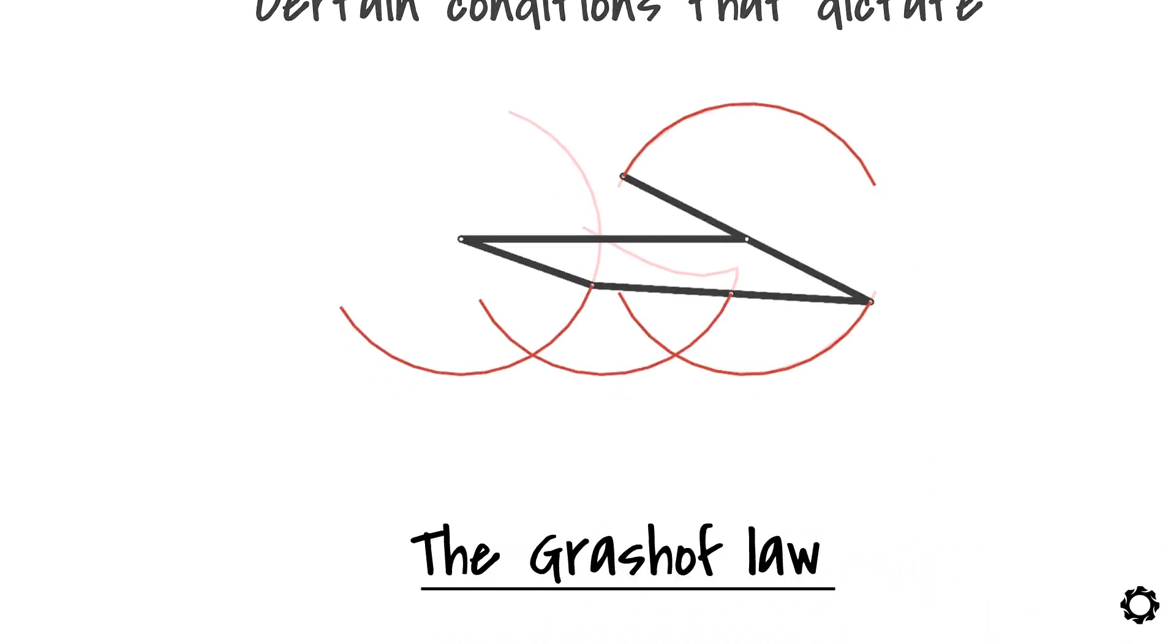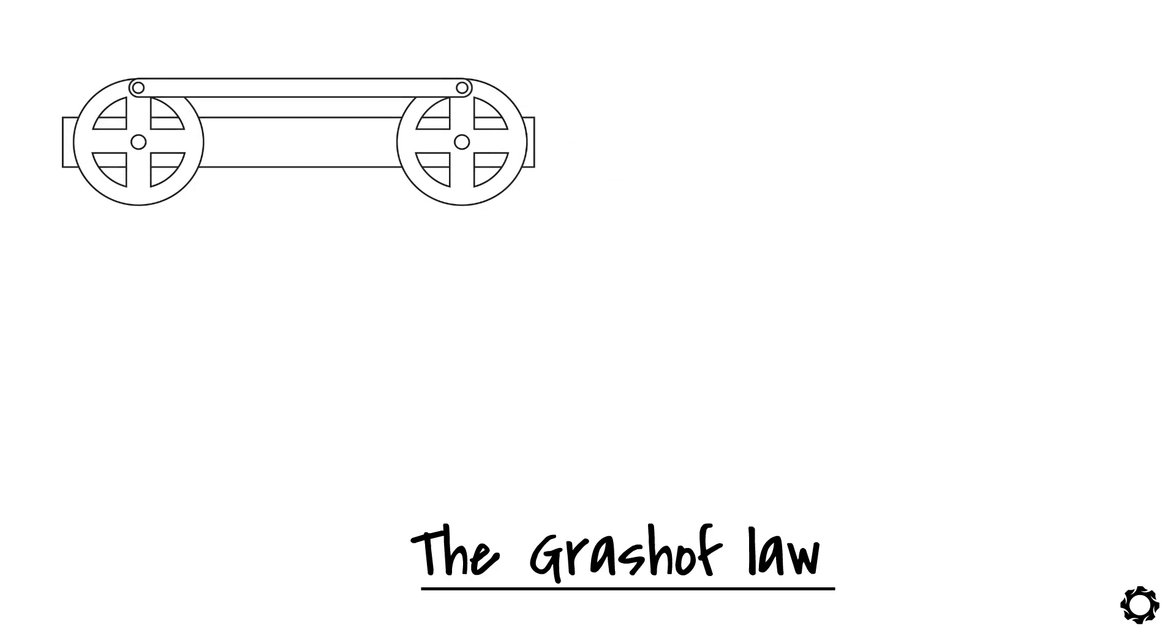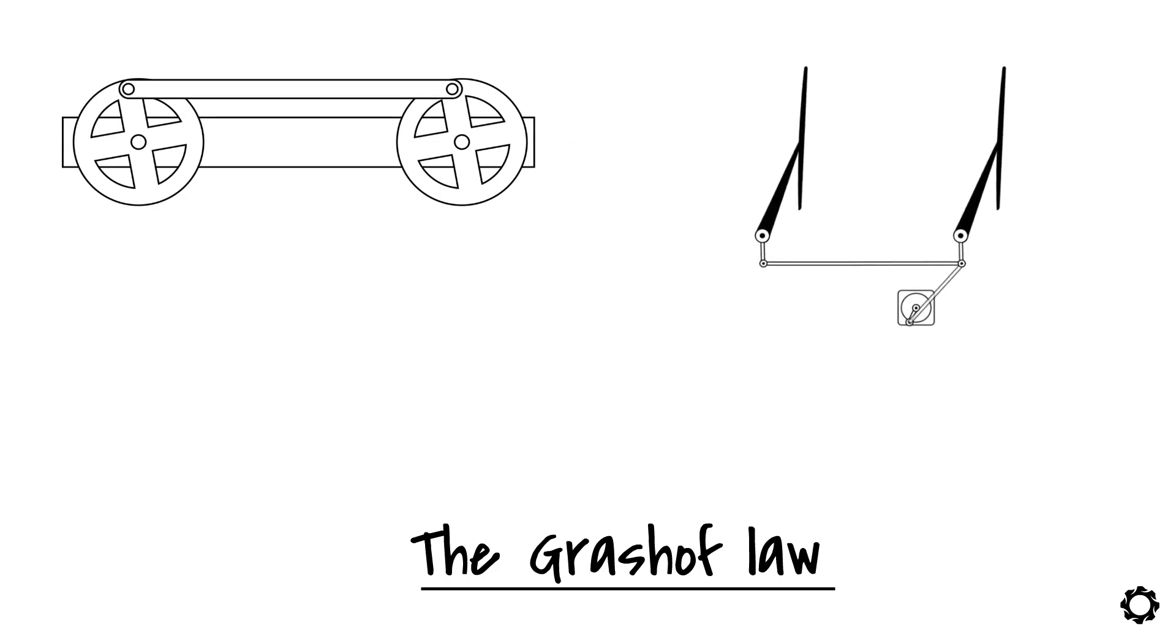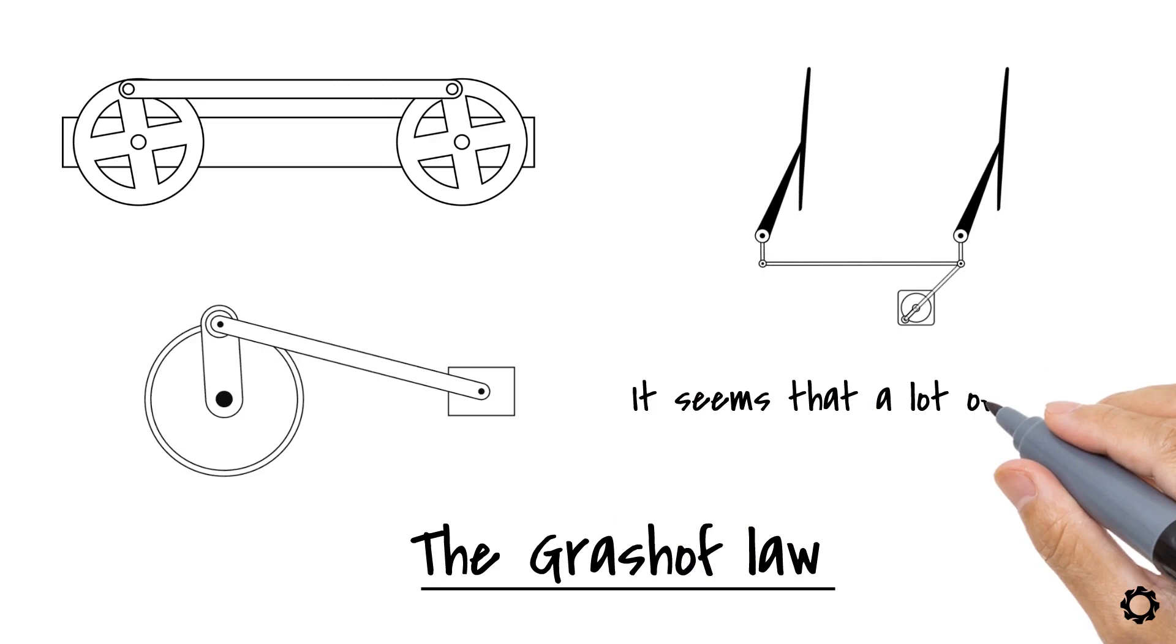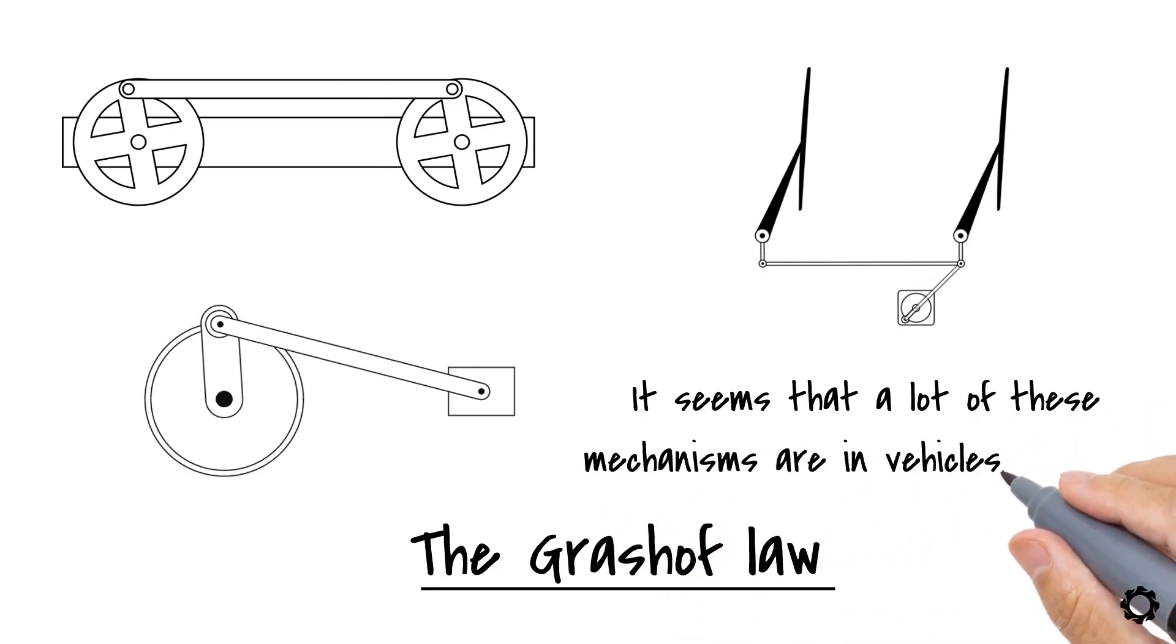Grashof's law can tell if the 4-bar mechanism behaves like a double crank mechanism seen in the locomotive mechanism, the double rocker mechanism which is seen in the windshield wiper of the car that we referred to earlier, and the crankshaft mechanism which can be seen in the car motor, specifically the pistons. It seems that a lot of these mechanisms are in vehicles, isn't it?